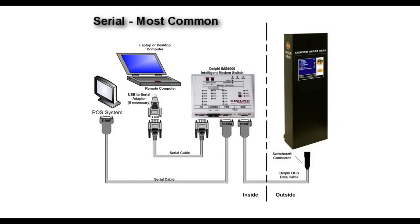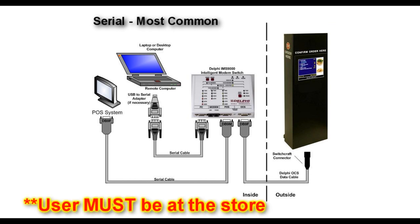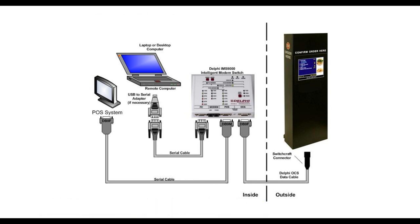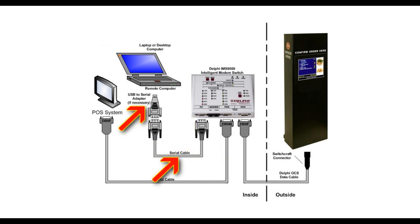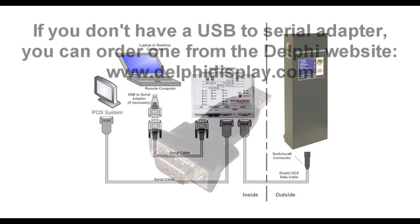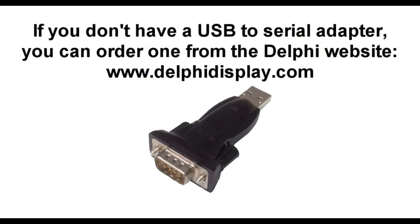Serial is the most common way to update displays and it's much faster than dial-up. However, the user must be at the store where the display is located to use this type of connectivity. You'll need to connect your laptop or desktop computer to the PC port on the Delphi IMS using a patch cord and USB to serial adapter. Your computer's connection will be USB and the PC connection on the IMS is serial. If you don't have a USB to serial adapter, you can order one from the Delphi website.